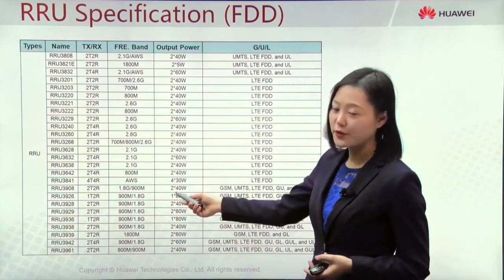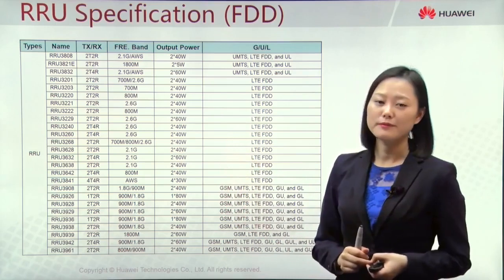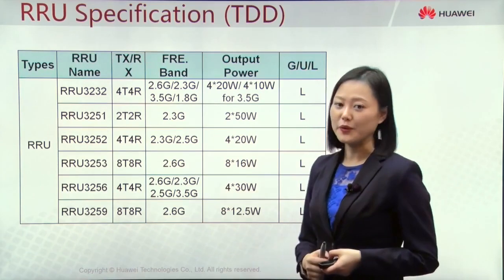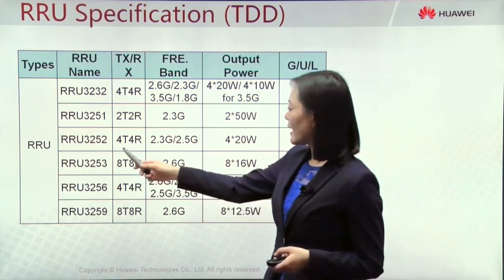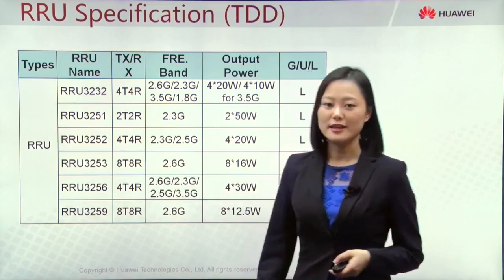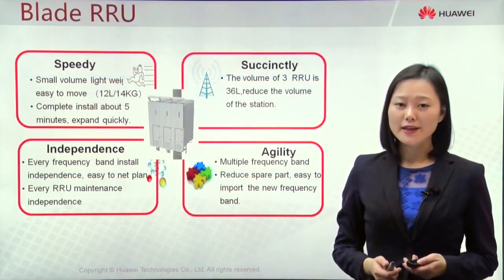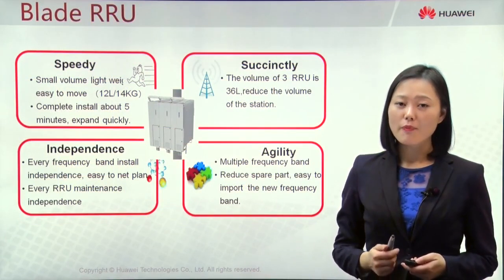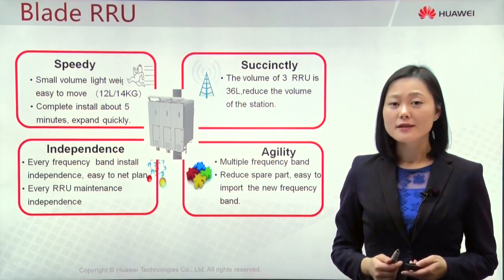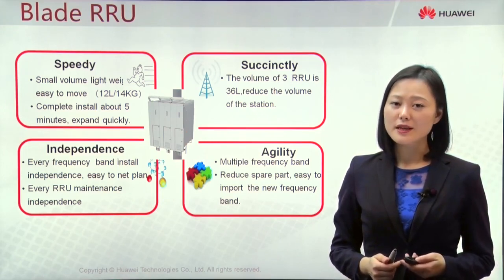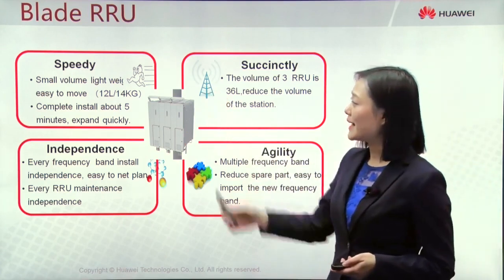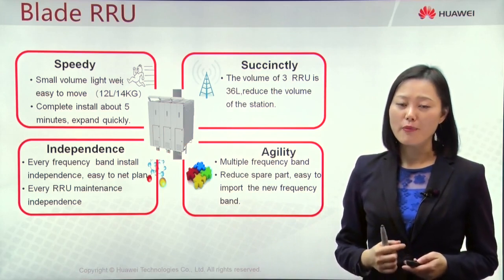The RRU can also work on different frequency bands and has different output power performance. For TDD mode, the number of RRU types is less than for FDD mode. RRU3253 and RRU3258 can support 8T8R antenna configuration. As operators add more and more new sites and equipment on towers year by year to provide better service, tower space becomes limited. This challenge led Huawei to develop the new Blade RRU in 2012 to help operators solve this problem.